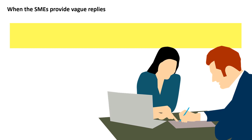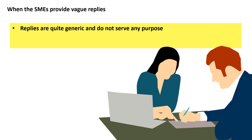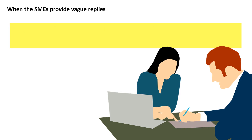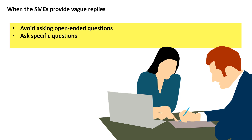At times, the replies you receive from SMEs are quite generic and do not serve any purpose. To prevent this, avoid asking open-ended questions — ask specific questions to get specific replies. Also, even if you are having a face-to-face meeting with the SMEs, it is a good practice to mail them all your queries beforehand. This gives the SMEs time to prepare and provide answers, and there are fewer chances that the SMEs will try to bluff you during the meeting.